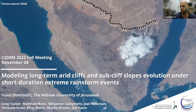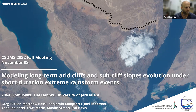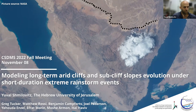Thanks, Matt. I'll share the screen. Hello everyone, it's very nice to be here. My name is Yuval, and I am a PhD student from the Hebrew University of Jerusalem in Israel. Today I will discuss work that I've been doing with colleagues from CU Boulder, from Utah State University, and from the Hebrew University of Jerusalem. The title of the talk is Modeling Long-Term Arid Cliffs and Sub-Cliff Slope Evolution under Short-Duration Extreme Rainstorm Events.